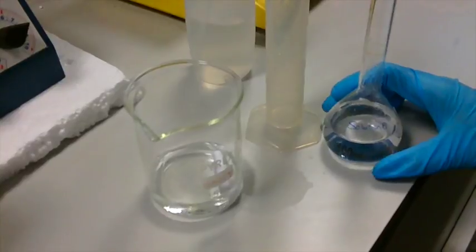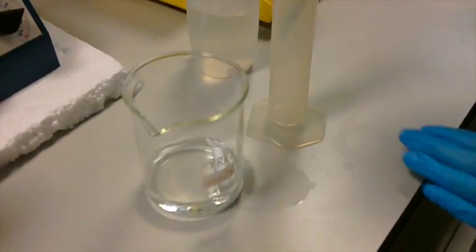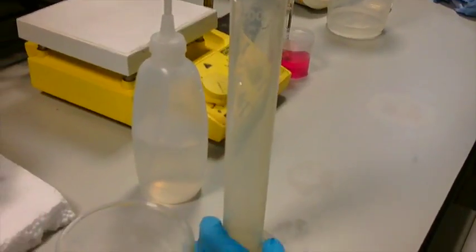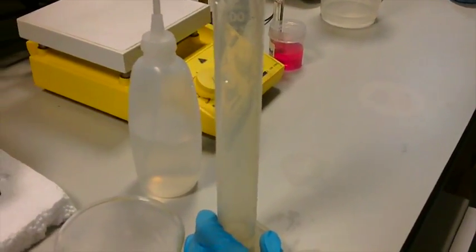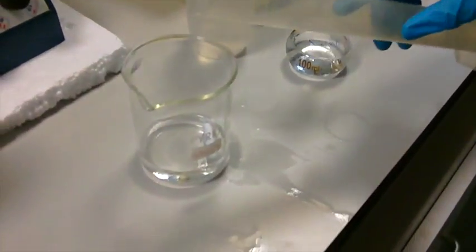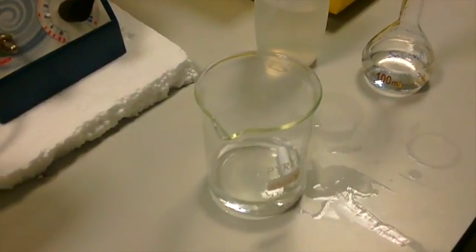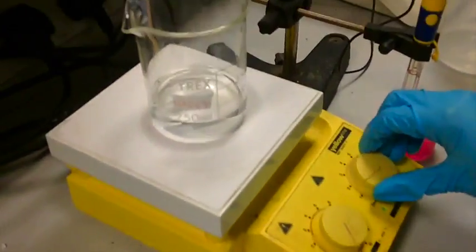You will then need to add the correct amount of solution B. In this case 6.15 ml for pH 6. This is now poured into the same beaker with the magnetic stirrer, and you move it over then to the magnetic stirrer and turn the stirrer on.